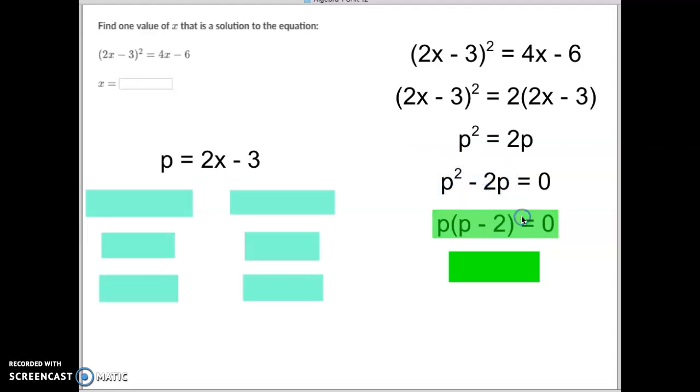So I'm going to factor out a p from both of those, and I get p times (p - 2) equals 0. I'll do my zero property product, so this one's got nothing with it, so it's p equals 0. And this one here, it equals the opposite of negative 2 or positive 2.